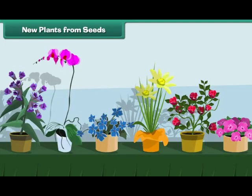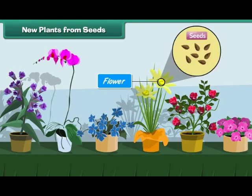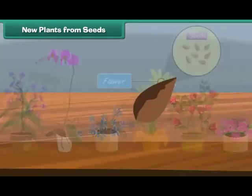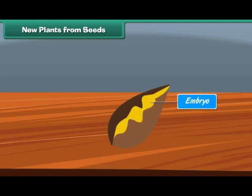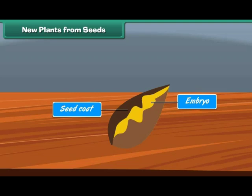New plants from seeds: flowering plants produce seeds. Each seed produced by a plant has a baby plant inside it, called the embryo. The seed is surrounded by a tough covering called the seed coat, which protects the baby plant and prevents the drying up of the seed.